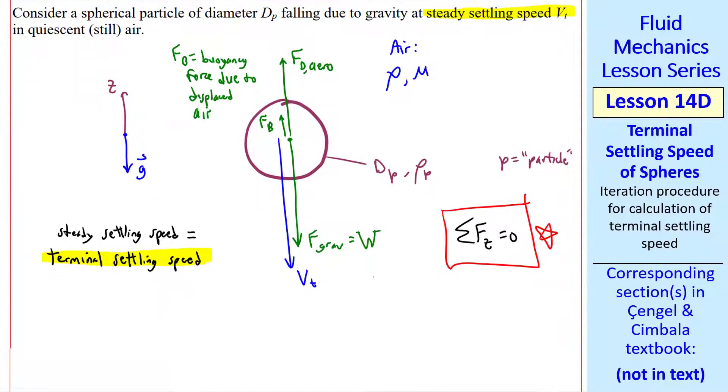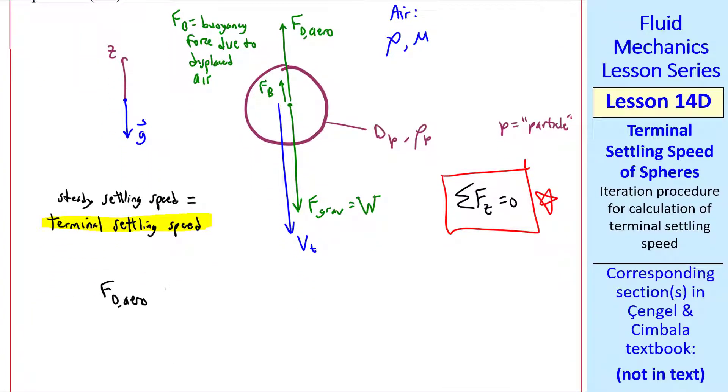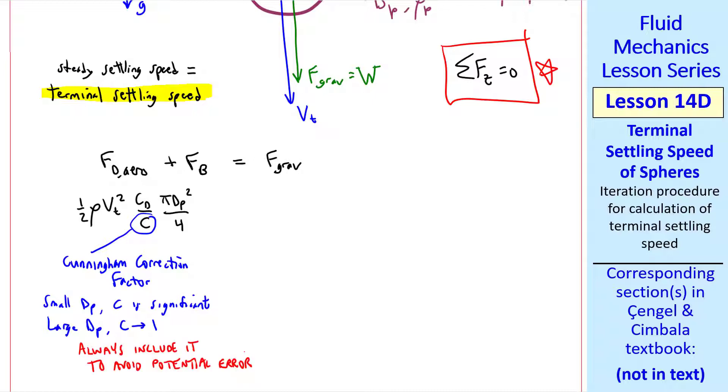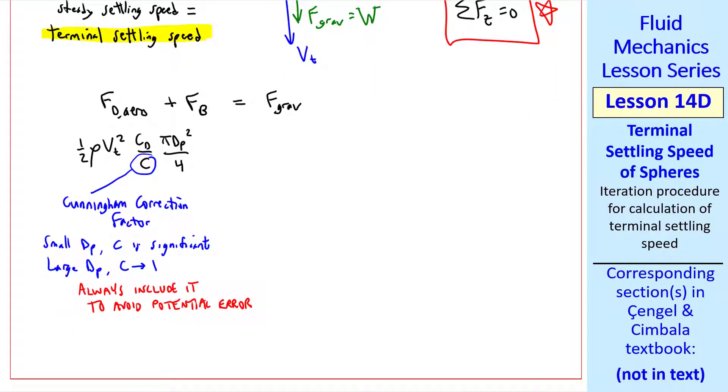Now let's sum all the forces and set them equal to zero. The upward forces are fd arrow plus fb, and the only downward force is the gravity force. The aerodynamic drag is one-half rho vt squared cd over c times pi dp squared over 4, where we defined Cunningham correction factor in a previous lesson. For small dp, c is significant and must be included. For large dp, c goes to 1 and does not need to be included, but I advise you to always include it to avoid potential error.